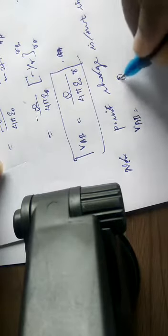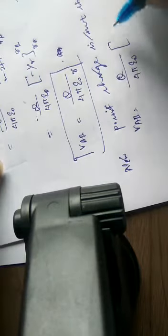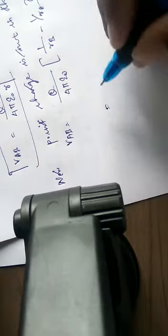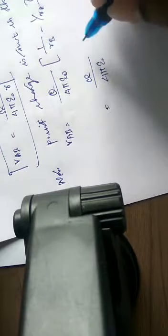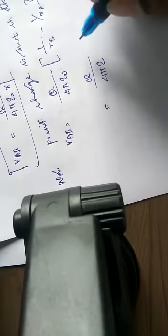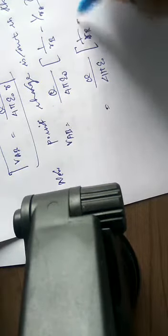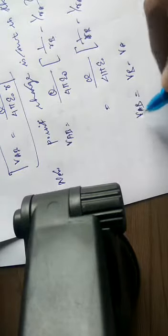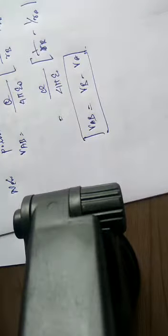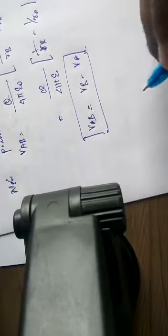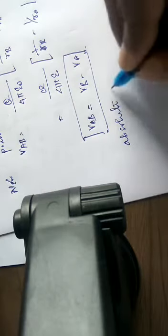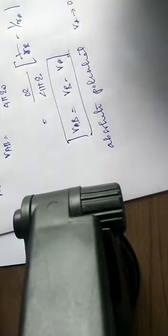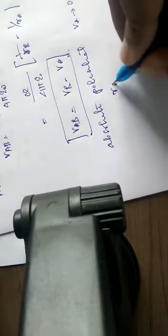So V_AB = q / (4πε₀) × (1/r_b - 1/r_a). This can be written as V_b - V_a. Now for absolute potential, I want to make V_a equal to zero. If V_a = 0, then r_a must be infinite.